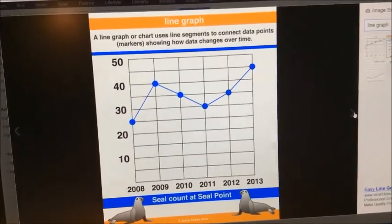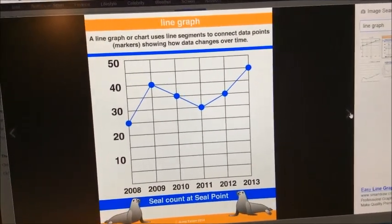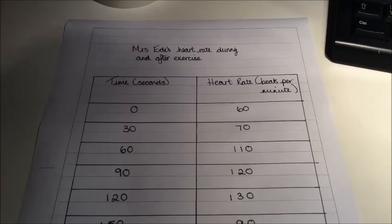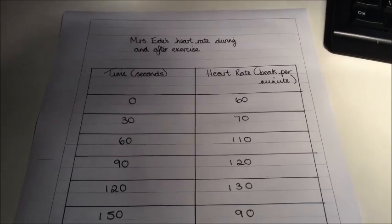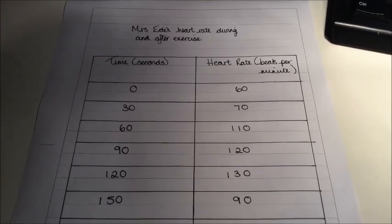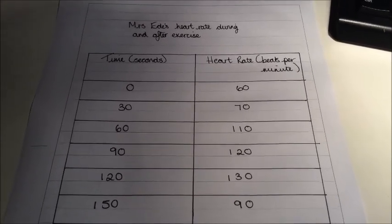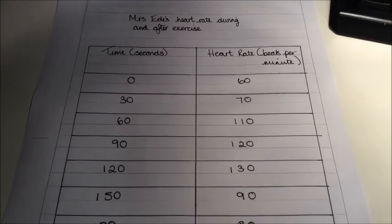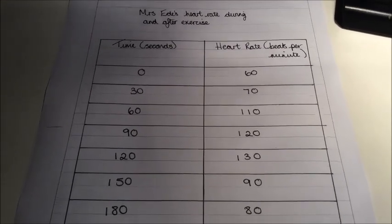Today I'm going to show you how you can draw your own line graph. First of all, we need to start with some information that we put onto a line graph. This one here is an example of how my heart rate changes during and after exercise. This is very similar to what we did in class the other day.